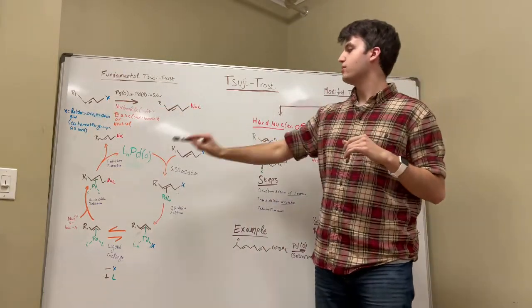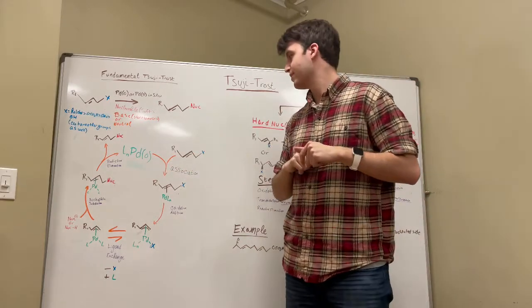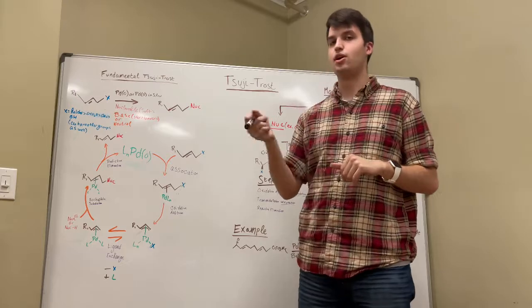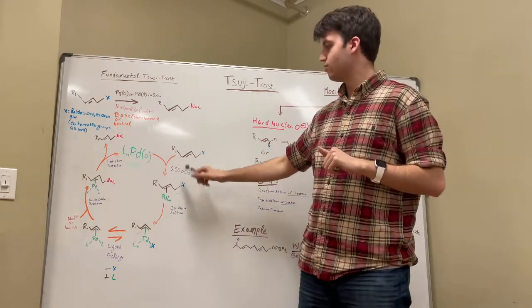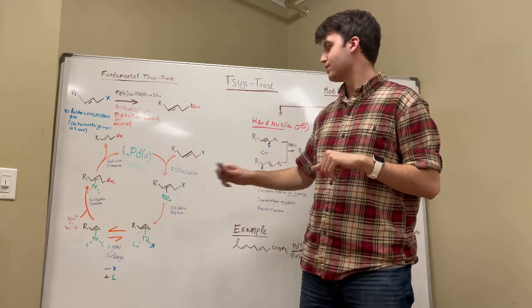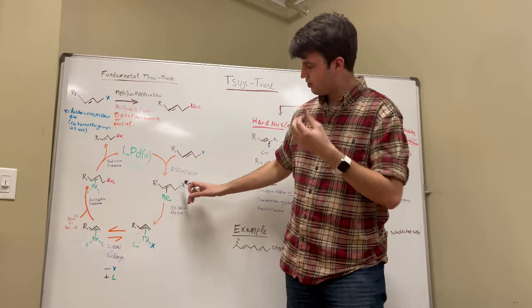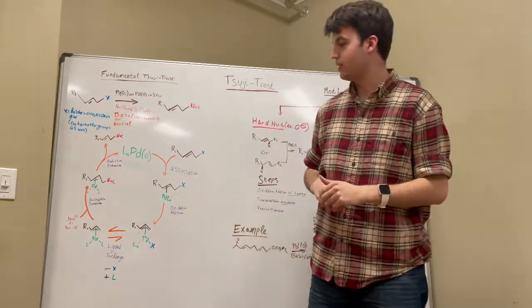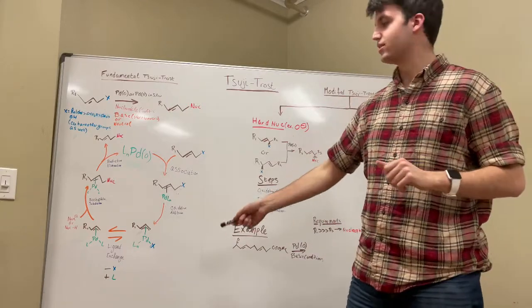Now, if we look at the catalytic mechanism for this, we see that we start with a palladium 0, of course. And then we actually do an association first step, not an oxidative addition first step. So, the palladium associates with the alkene here, and then we do an oxidative addition, where the leaving group actually moves onto the palladium, and we get this little conjugate system right here that the palladium is connected to.